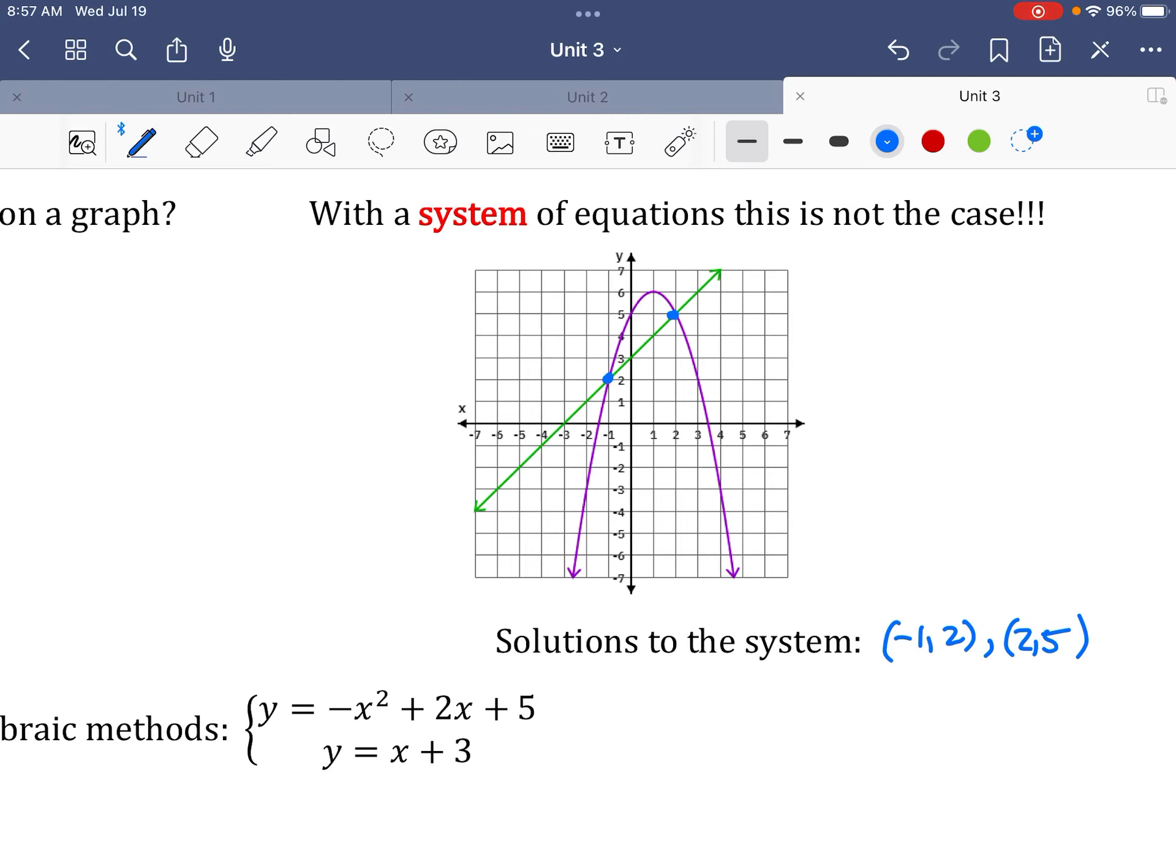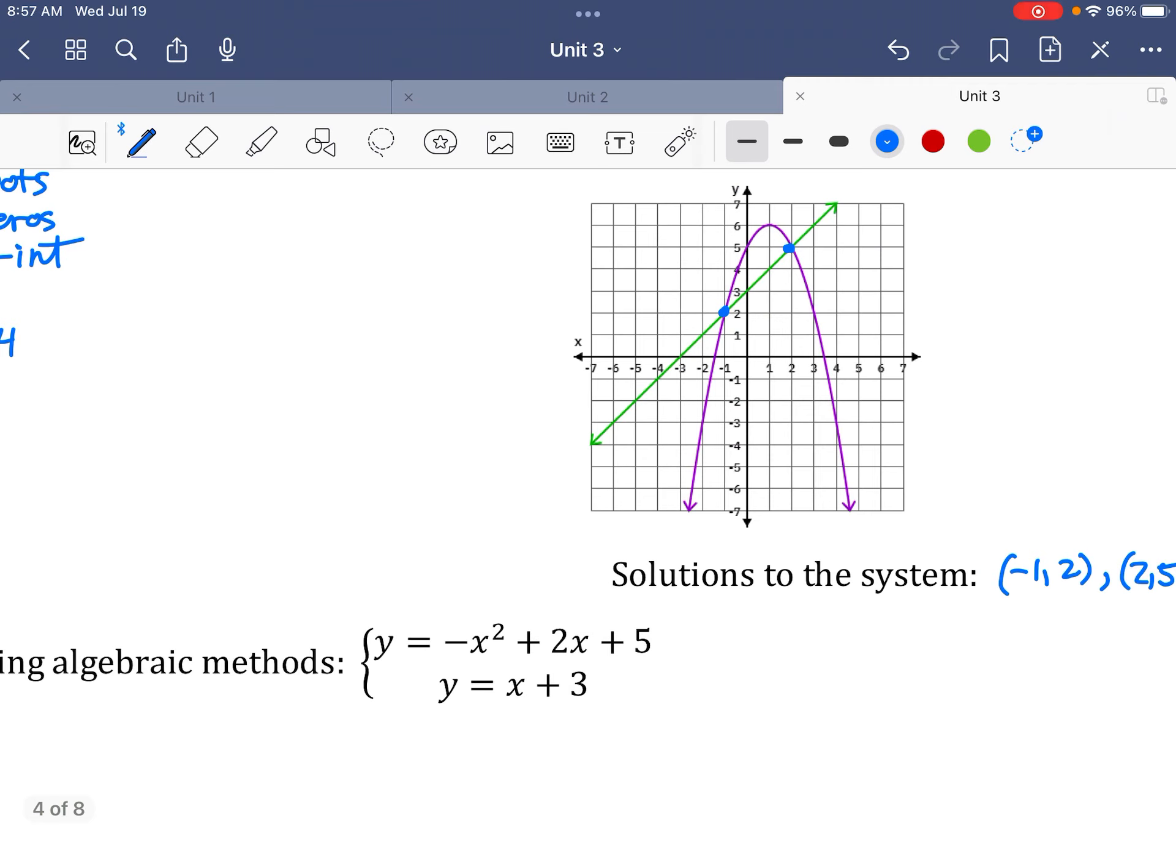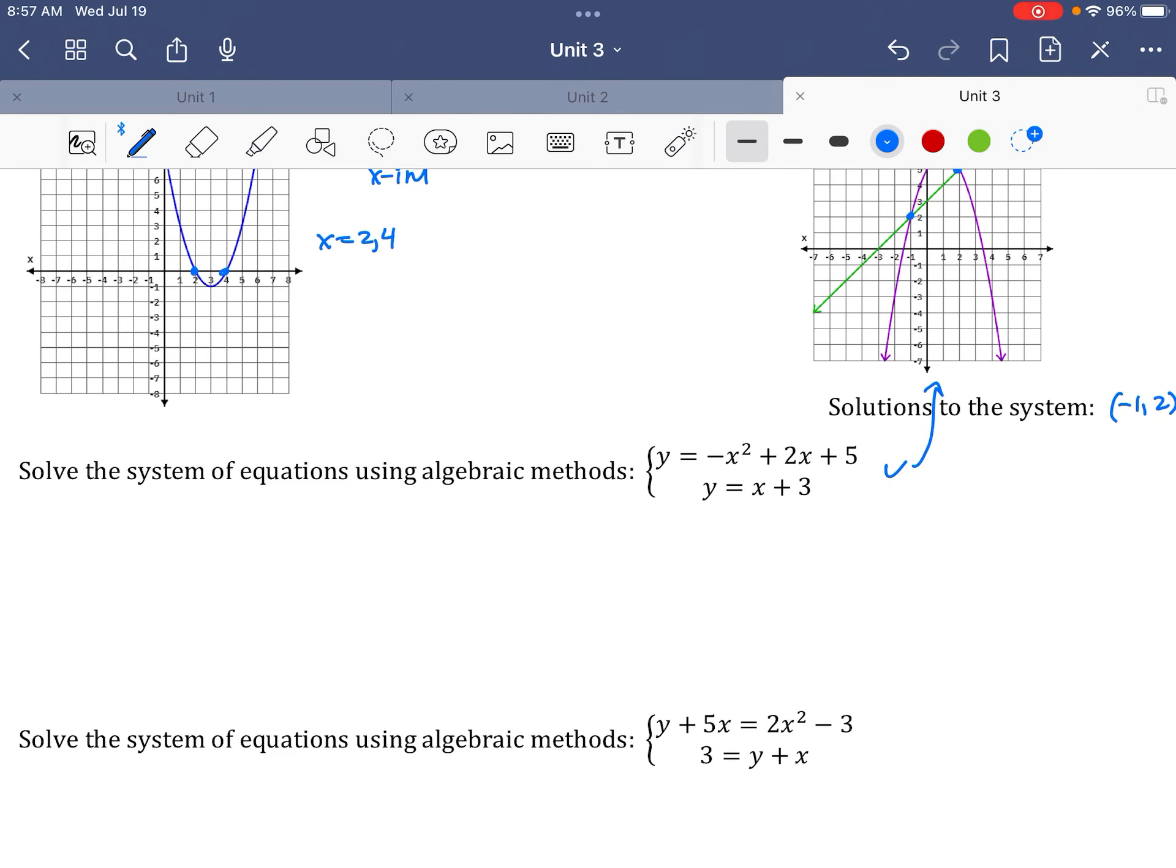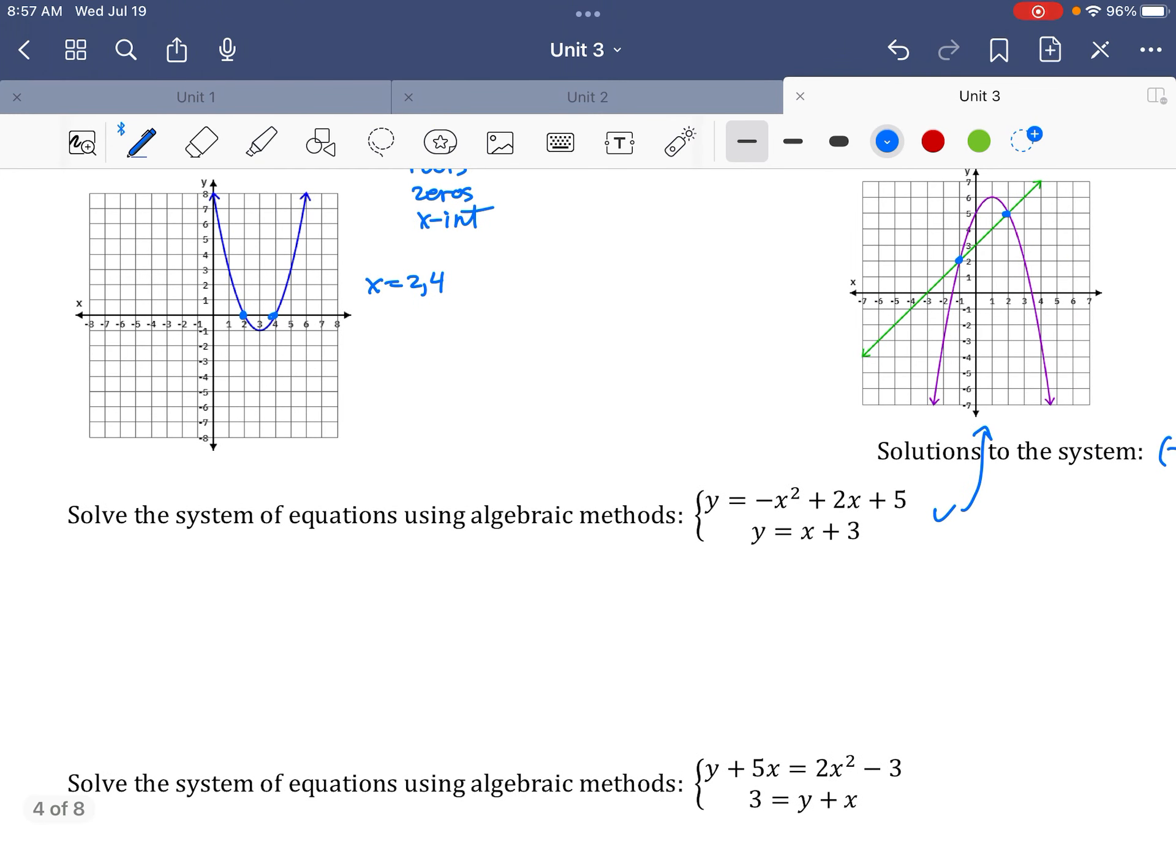Now, so this next problem is this same exact problem up here. So basically, this one right here, this is the graph of those two things. I'm going to show you how to do this algebraically. So both of these equations are solved for y. So that means that they're both equal to y, they're both equal to each other. So I'm going to set it up like that to basically do substitution. I'm going to be substituting this right here. All right, so I get x plus 3 equals negative x squared plus 2x plus 5. And so now I just have a quadratic equation to solve with any of my methods that I know. Quadratic formula, factoring, square roots, things like that.